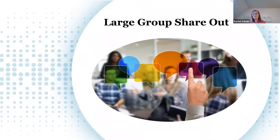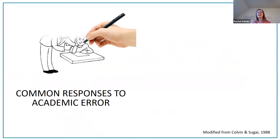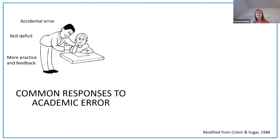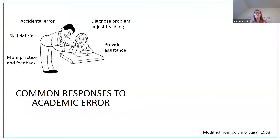What Karen is reading has been my experience as well. I've been a special ed teacher for a really long time, working with students with both emotional behavioral disorders and cross categorically. Let's take a look at what research tells us some common responses to error are. When a teacher notices an academic error, more often than not, that error is considered to be either something done by accident or caused by a skill deficit. In response, teachers most often provide more practice and additional feedback.